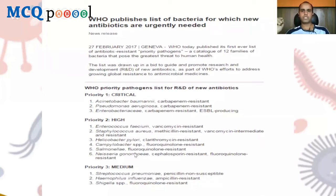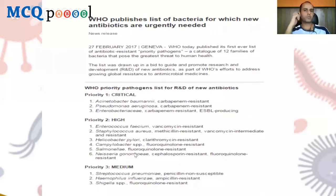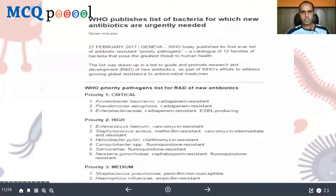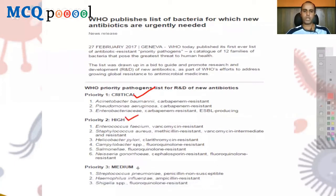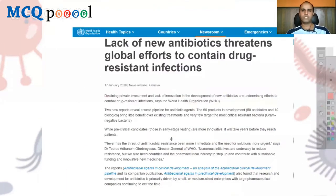In 2017, WHO published news identifying 12 different pathogens that urgently need new antibiotics, categorized as priority one (critical), priority two (high), and priority three (medium). Fast-forwarding to 2020, WHO still states that the lack of new antibiotics is threatening the global effort to contain drug-resistant infections.